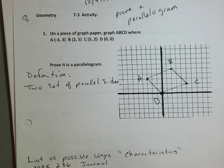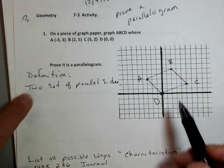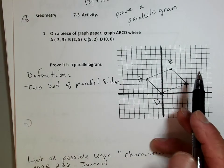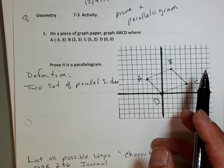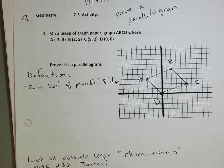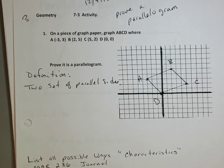And if I want to prove two sets of parallel sides, I know that if two lines are parallel, they have the same slopes. Because if they're off by a little bit and they go and go, eventually they won't be parallel. So to prove they're parallel and make sure they'll never intersect, we need to look at their slopes.